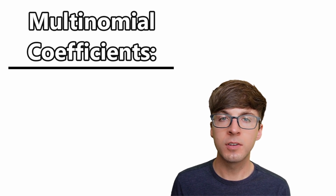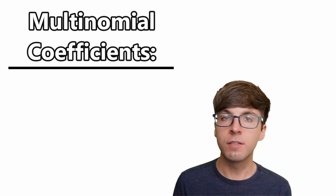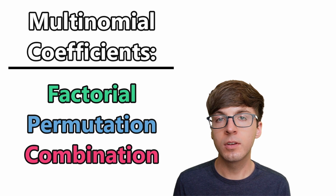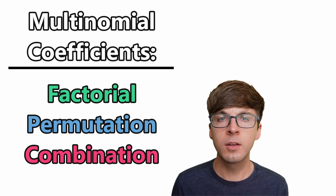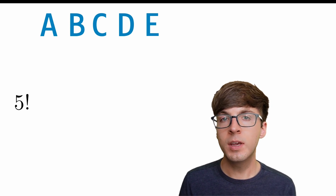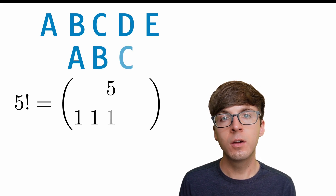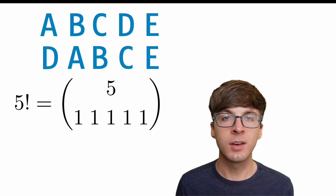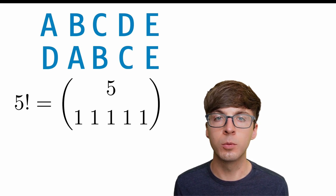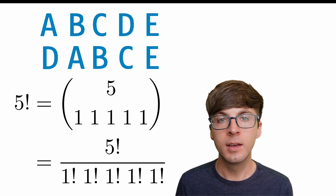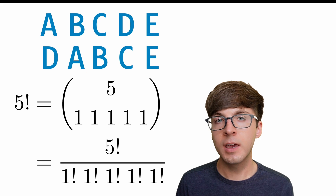It turns out the multinomial coefficient includes the factorial, the permutation, and the combination as special cases. For the factorial problem with letters A through E, we can use a multinomial coefficient: five objects, choose one position for A, one for B, one for C, one for D, and one for E — giving us five choose one, one, one, one, one. The formula is five factorial divided by a bunch of one factorials, which are all one. So we just get five factorial — confirming that factorial is a special case of the multinomial coefficient.